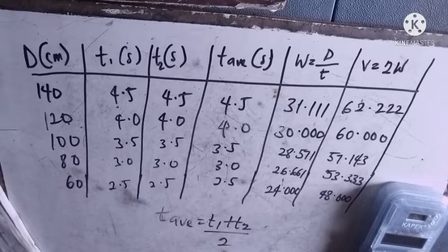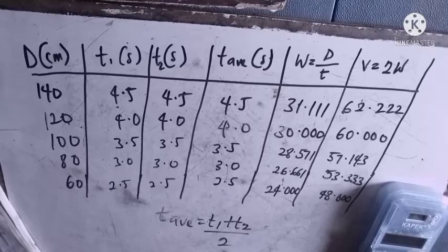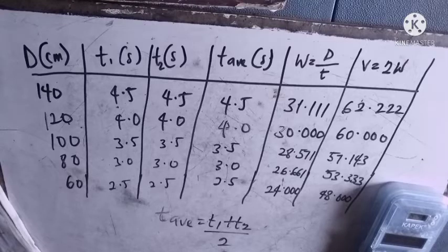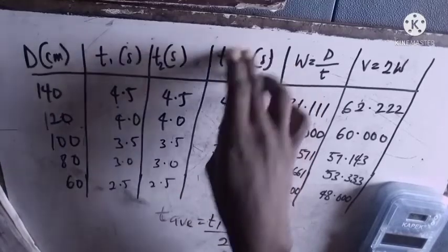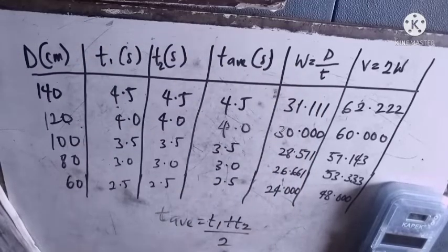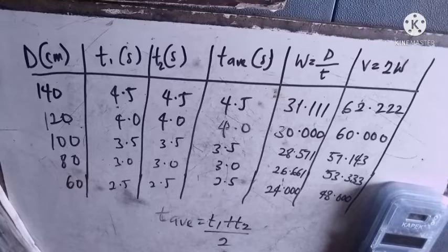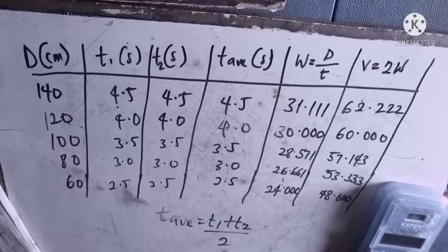You might ask how do I know what I should put on my table - they will tell you evaluate this or calculate this, those are the stuff that will be on your table. Your t-average is t1 plus t2 over 2, so when you do 4.5 plus 4.5 equals 9 divided by 2 equals 4.5.